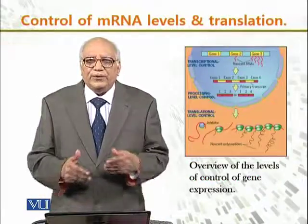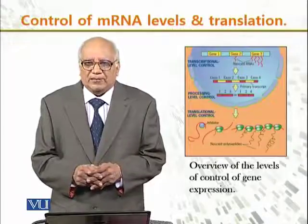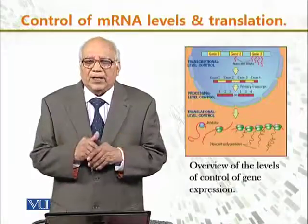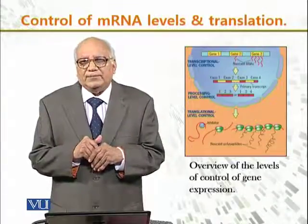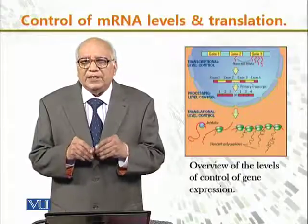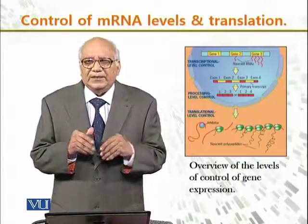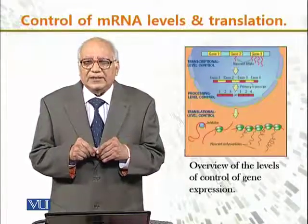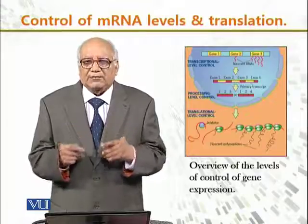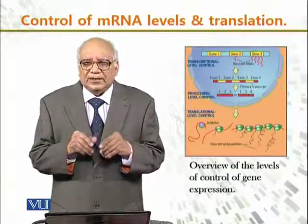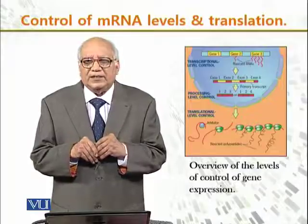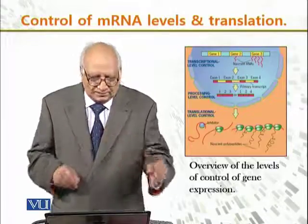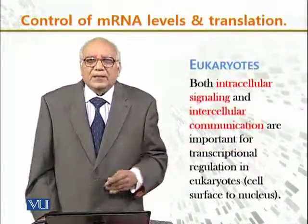This diagram depicts the overview of levels of control of gene expression. There is gene one, gene two, and gene three, and they are being controlled at different levels, where the final control is eventually the translation of different types of proteins in eukaryotic cells.